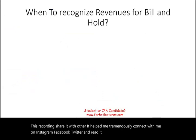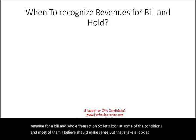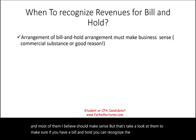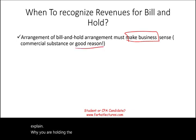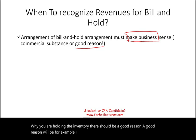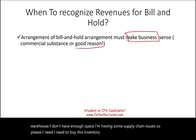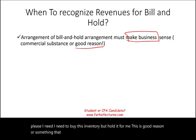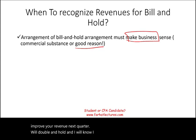Let's look at the conditions for recognizing revenue under a bill and hold transaction. First, the agreement must make business sense. You have to explain why you are holding the inventory — there should be a good reason, such as not having enough space in your warehouse, supply chain issues, or insufficient employees. That's a good reason with commercial substance. The reason cannot simply be: I'll do it for you this quarter so you can improve your revenue.